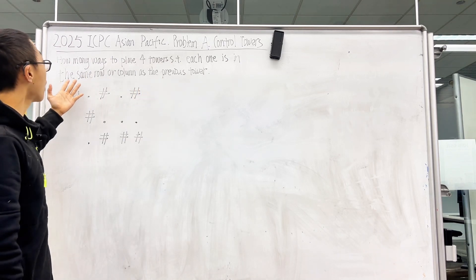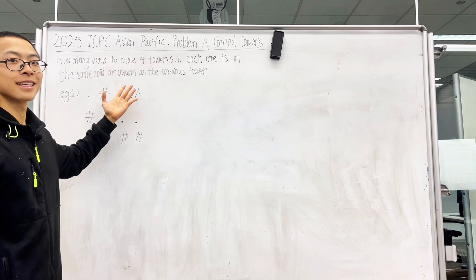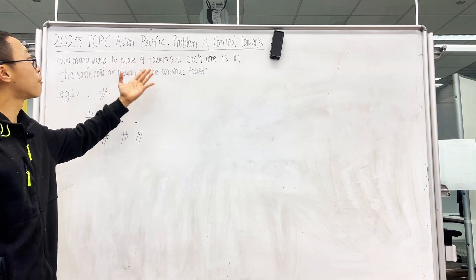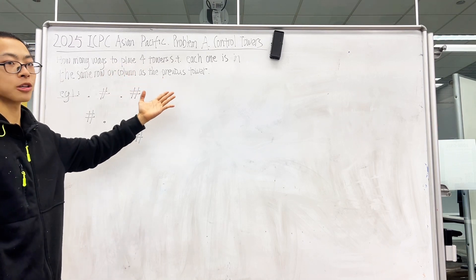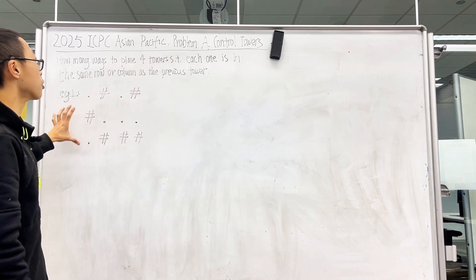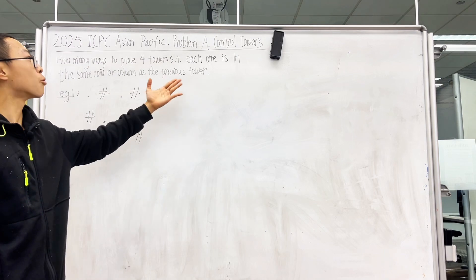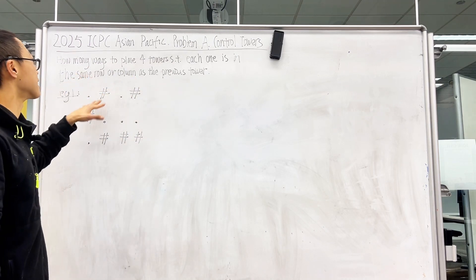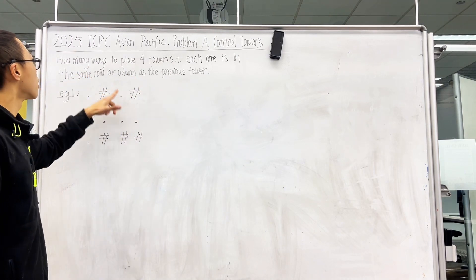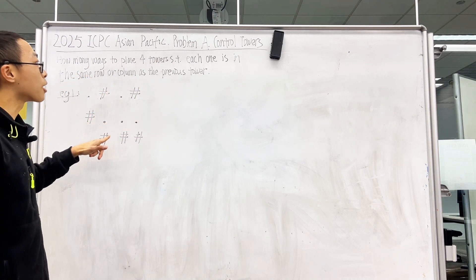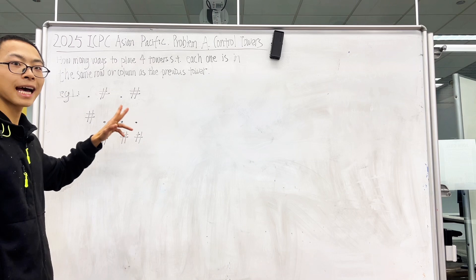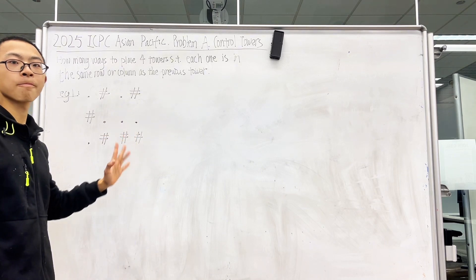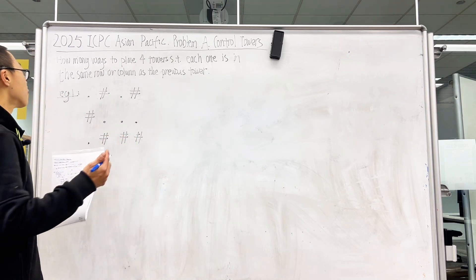The question: how many ways to place four towers on the grid such that each one is in the same row or the same column as the previous tower? What is an example?